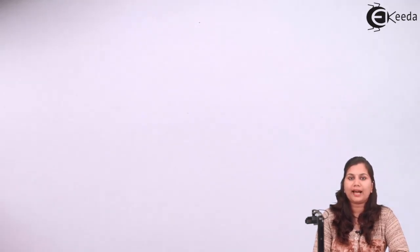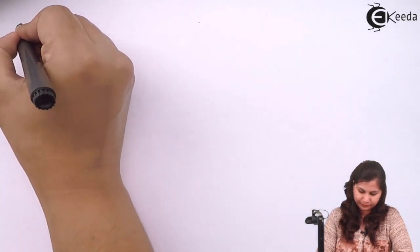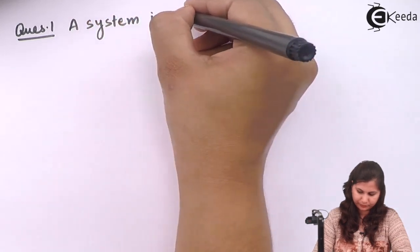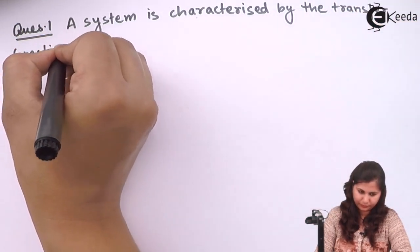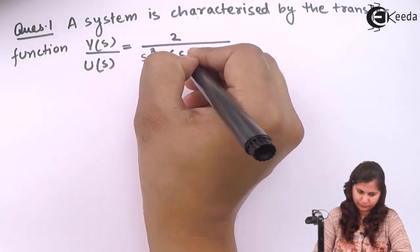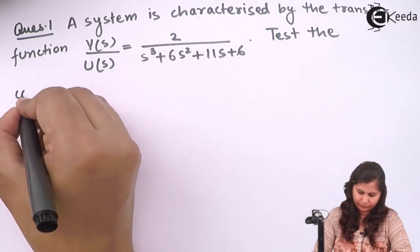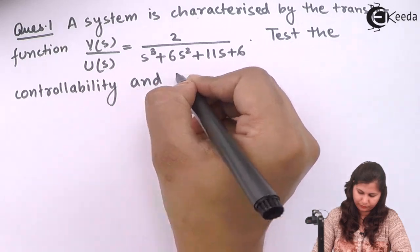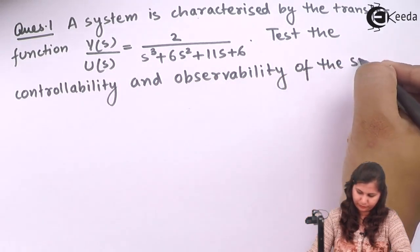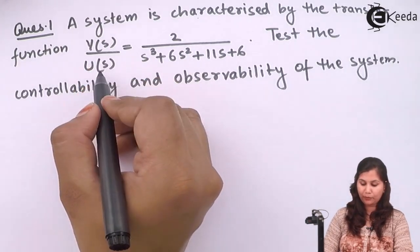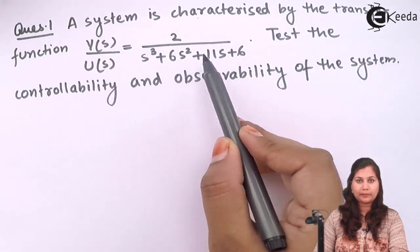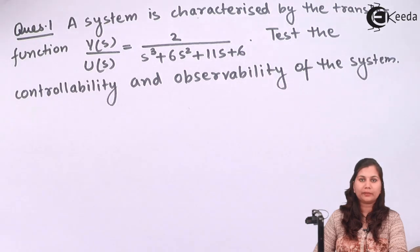Hello friends. In this video we are going to solve a problem on how to check the controllability and observability of a system. Our problem is: we are given a system characterized by the transfer function Y(s)/U(s) = 2 / (s³ + 6s² + 11s + 6), and we have to test the controllability and observability of the system.